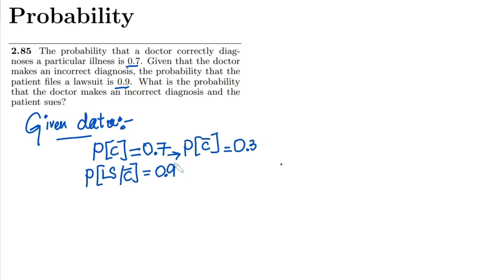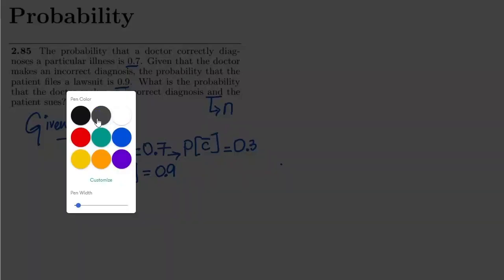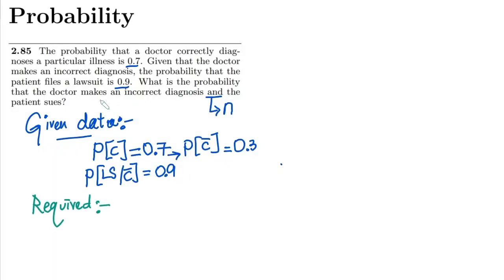Having the correct given data and knowing the required things solves half the question. What is required here is the probability that the doctor makes an incorrect diagnosis AND the patient sues. Since 'and' is used, we need the intersection, so we need to find P(lawsuit ∩ C complement).